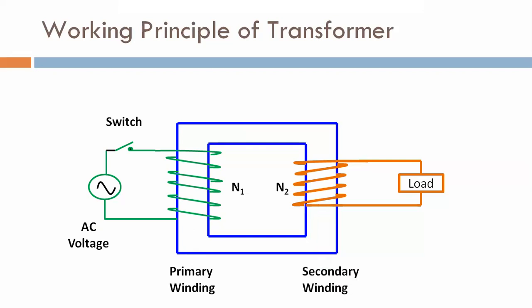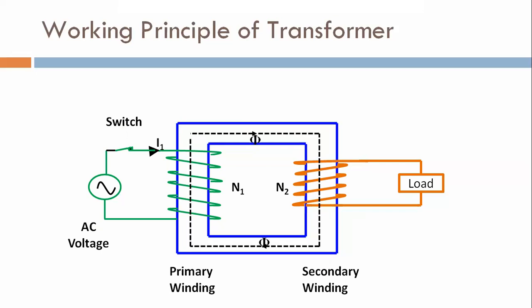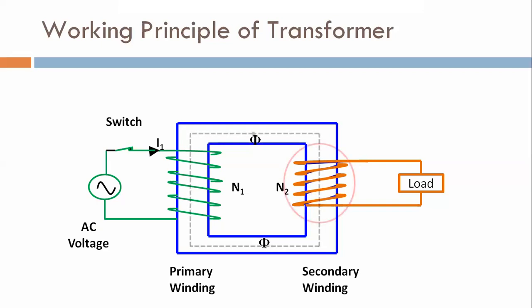This is the primary winding, this is the secondary winding, this is N1 turns, and this is N2 turns. This switch is linked with the primary winding and we are applying supply. So what happens on the load side — the flux will develop and that flux will link with the secondary winding. Most of the flux links with the secondary winding and hence the mutually induced EMF is induced in the secondary winding.